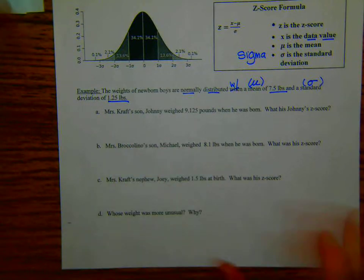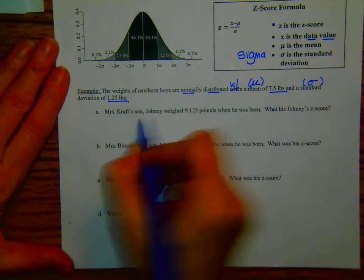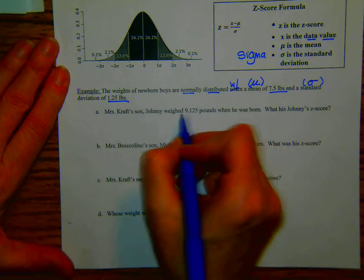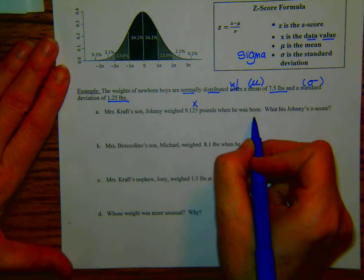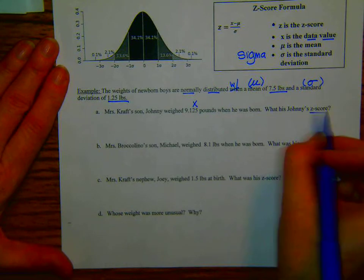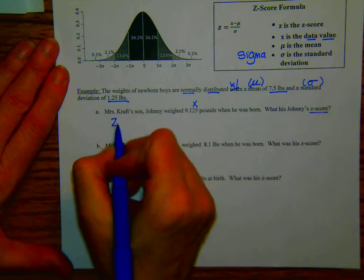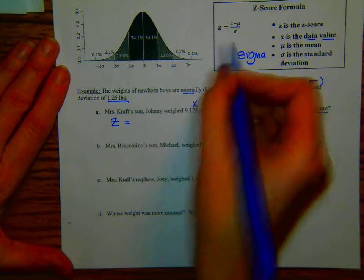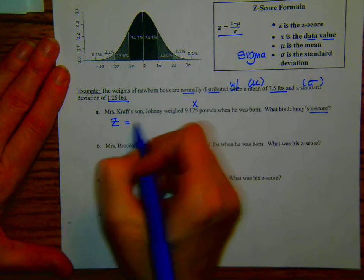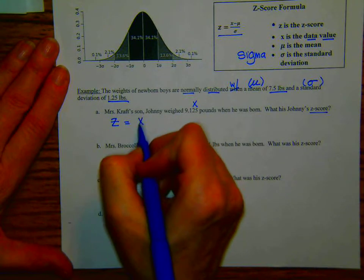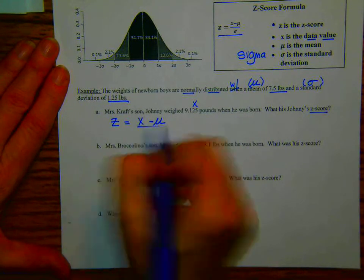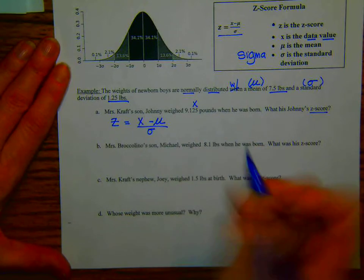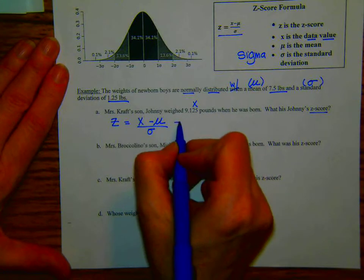So here's some people we know. Mrs. Craft's son, Johnny, weighed 9.125 pounds, that's our x, when he was born. What is Johnny's z-score? All right. So z equals, let's look at our formula. We have it up here. Z equals the x that we have minus the mean over sigma, the standard deviation. So let's solve.